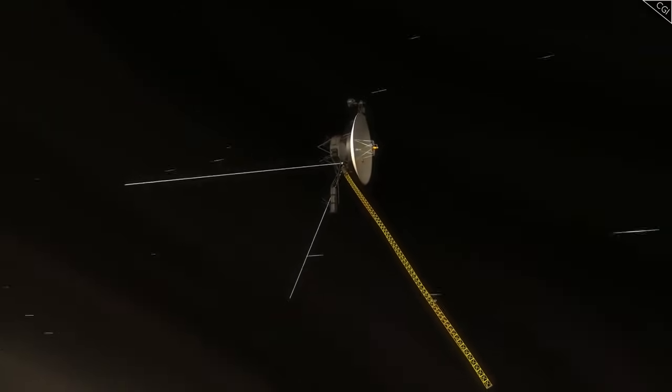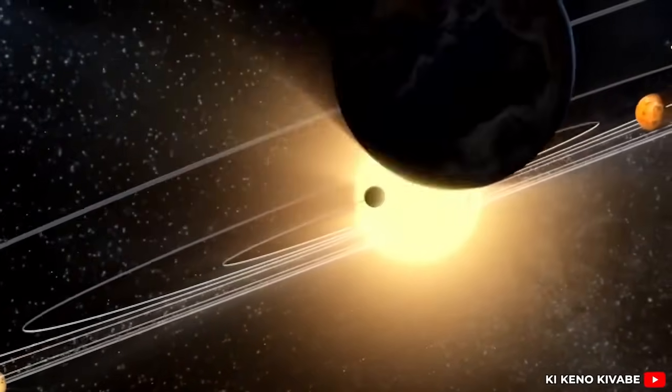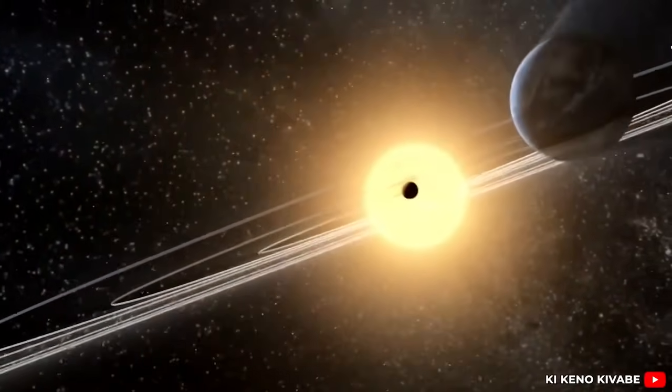NASA's Voyager 1 spacecraft recently communicated using a backup radio transmitter that had been dormant since 1981. This milestone highlights the ingenuity and resilience of the spacecraft, which is now over 15 billion miles from Earth.